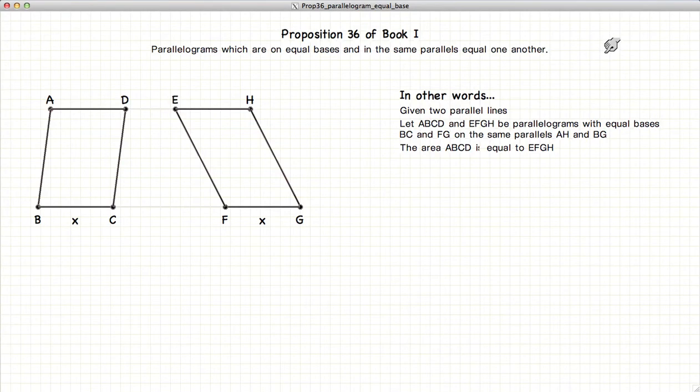This video presentation is going to be on Proposition 36 of Book 1, which states that if you have two parallelograms that are on the same parallel lines and the bases are equal, then the area of the two parallelograms is also equal.